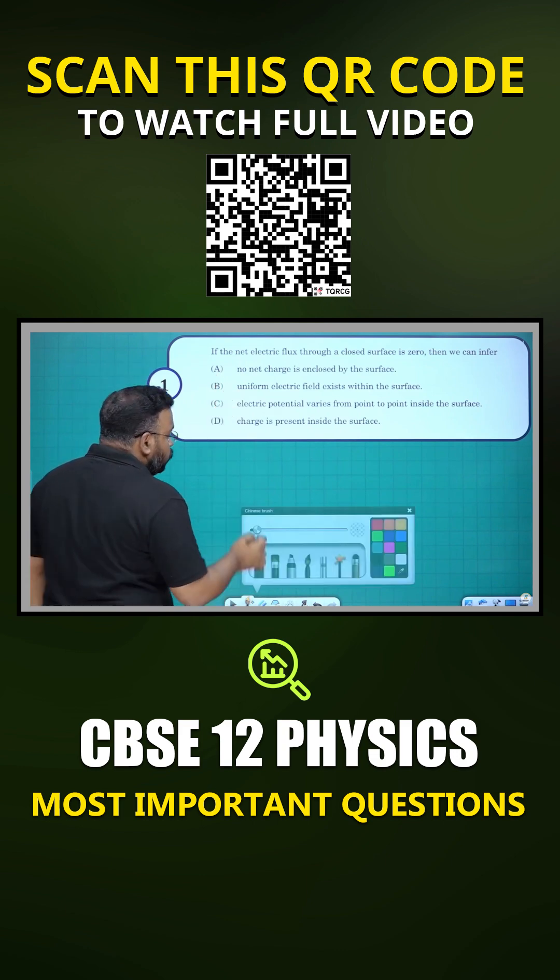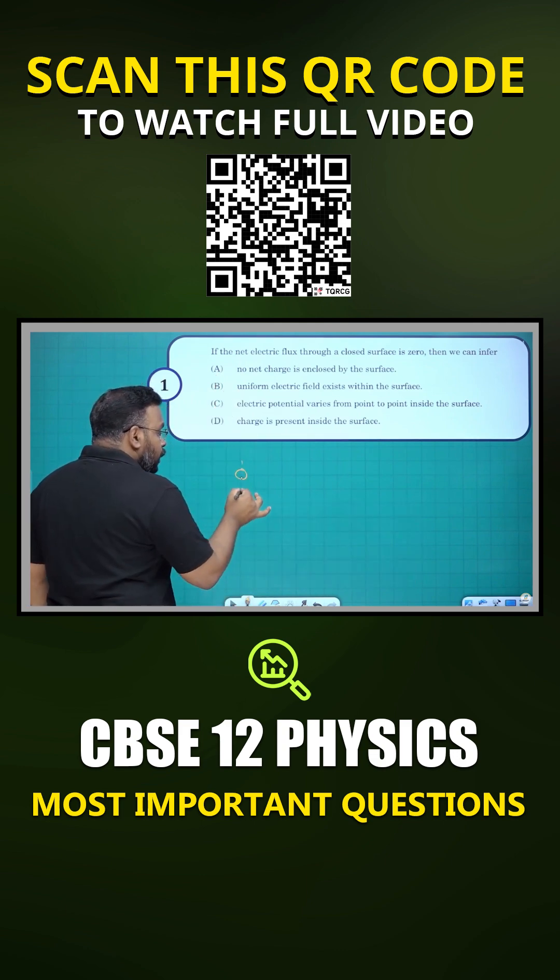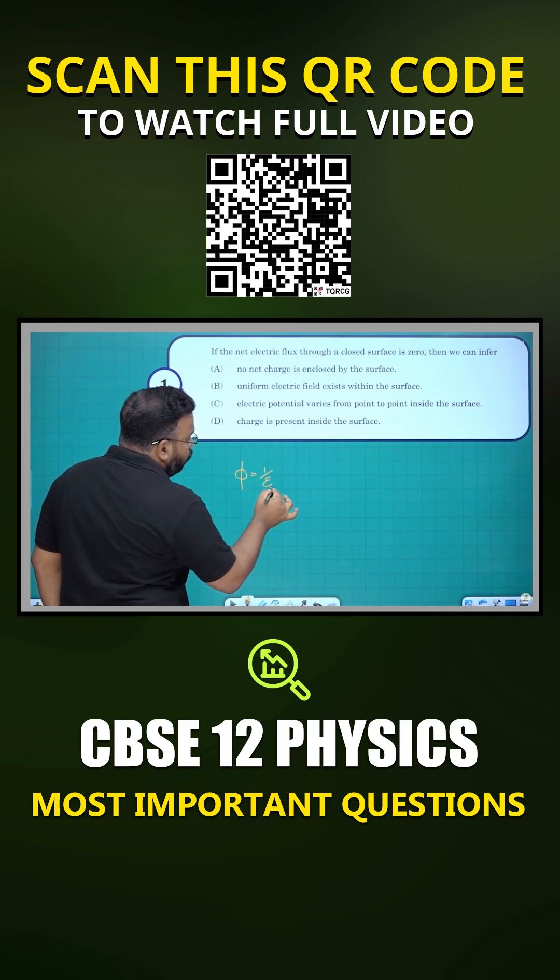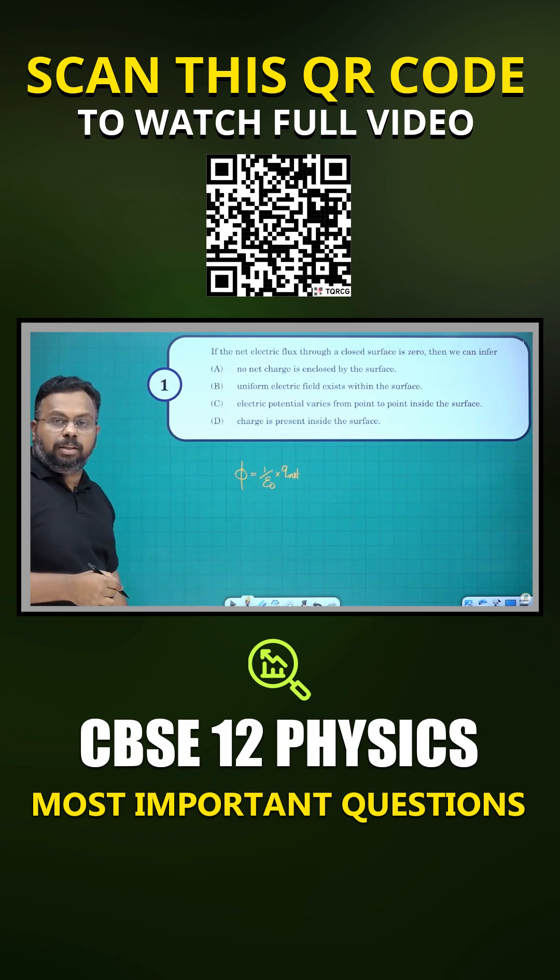Look at the question - net electric flux. You know that according to Gauss's theorem, net electric flux phi is equal to one by epsilon naught into Q net, where Q net is the net charge enclosed.